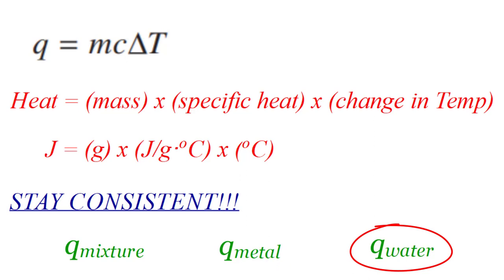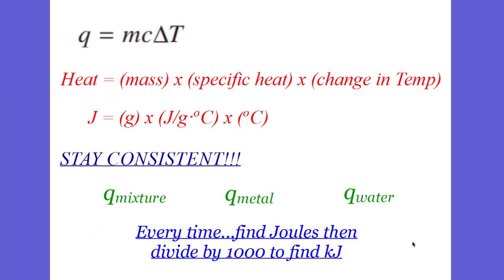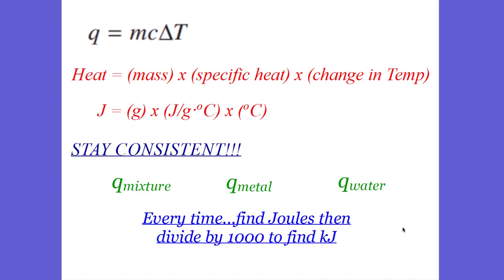Every single time you will find joules. Take those joules, write them down, then divide by 1,000 and write that down — that is the same energy in kilojoules — because you're going to be able to use these numbers later on, as you're going to see.